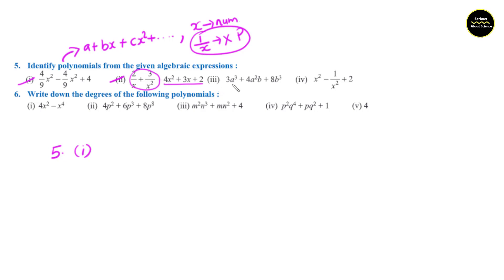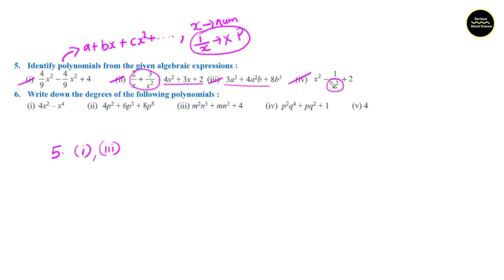Third expression: 3a cube plus 4a square b plus 8b cube. This is of the form a plus bh plus ch square, so this is also a polynomial. Fourth expression: h square minus 1 by h square plus 2 — here 1 by h square has the variable as denominator, so it is also not a polynomial. Section number 5 answers are expressions 1 and 3.